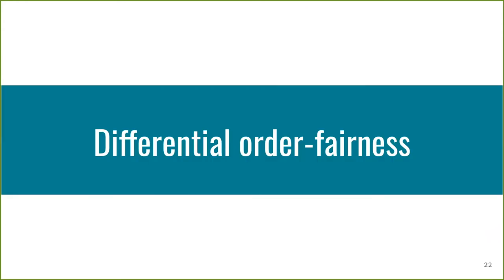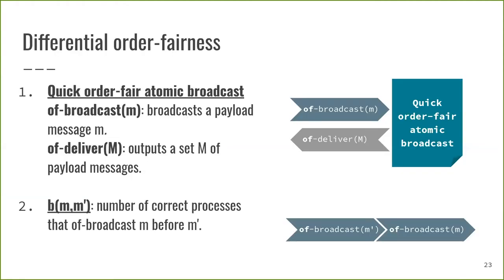We call our notion of a fair order differential order fairness. Along with the definition, we further developed a protocol that implements differential order fairness, which is called quick order fair atomic broadcast. Using the interface OF-Broadcast, a message M can be broadcast to the protocol and OF-Deliver will output a set of messages. To count the appearance of a message M before a message M' in the local input orders of correct processes, we define the function B with inputs M and M'.